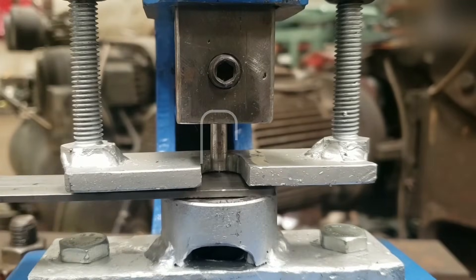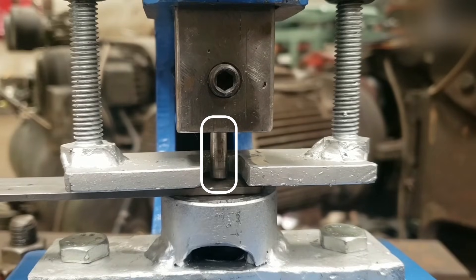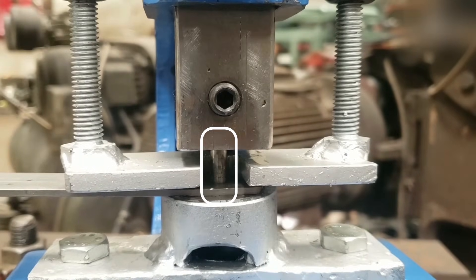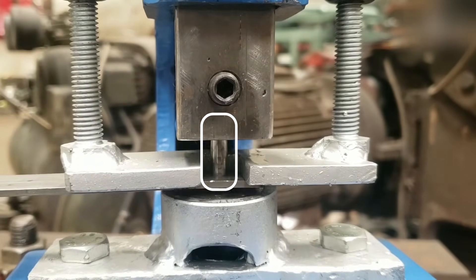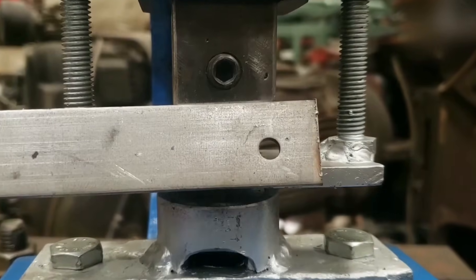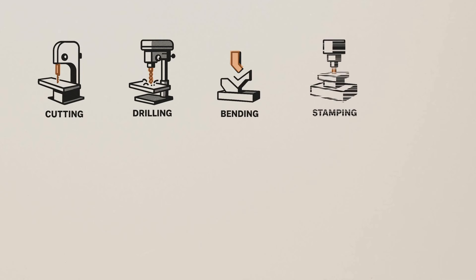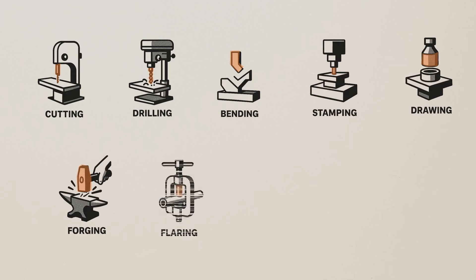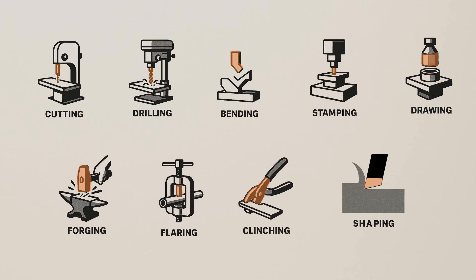Before we understand tool steels and their grades, first let's understand what a tool actually is. A tool is the part of a machine that directly works on the job. It does the actual work like cutting, drilling, bending, stamping, drawing, forging, flaring, clenching, or shaping the material.